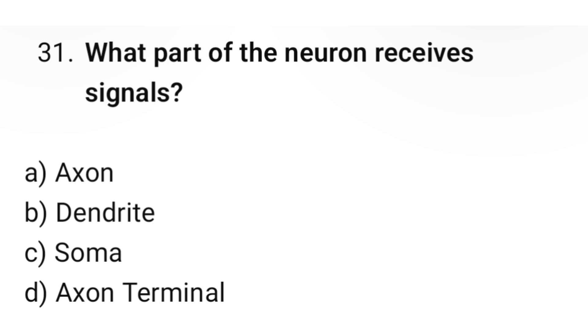Question number 31: What part of the neuron receives signals? The correct option is B. Dendrite.